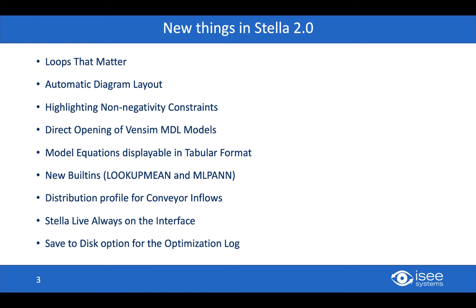Another cool new feature is Automatic Diagram Layout, which is useful in relationship to another new feature: the direct opening of Ventsim models. Some Ventsim models don't necessarily have full structural depictions of their logic in terms of stocks and flows in diagrammatic elements. So we can machine-generate the missing pieces or even a full model diagram to give those models stock and flow diagrams. Also new in 2.0 is the ability to automatically highlight non-negativity constraints — any time a flow equation is touched to make a stock non-negative, we highlight it in bright yellow.